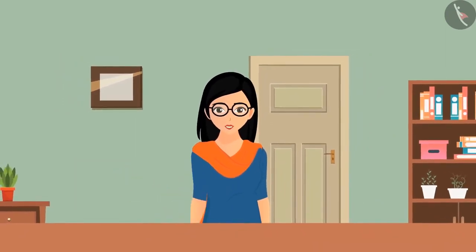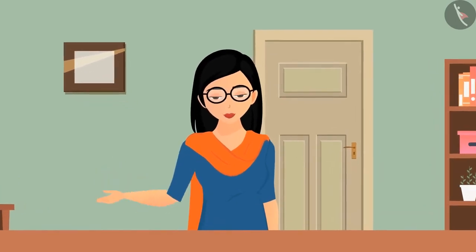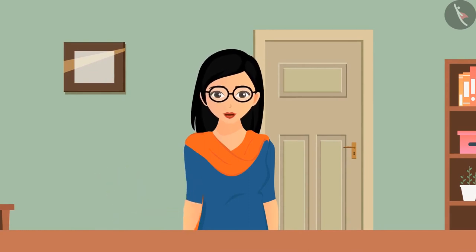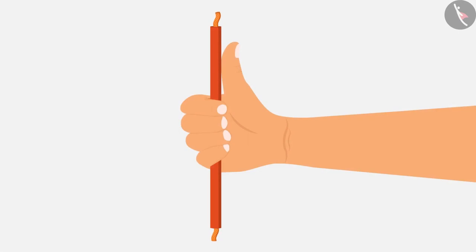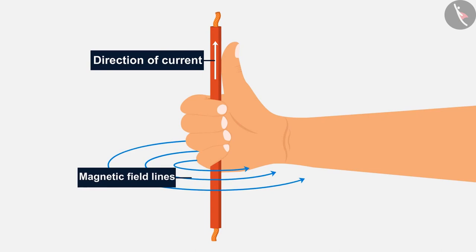Let's make it easier to remember with the right-hand thumb rule. If we need to find the direction of magnetic field lines around a current-carrying conductor, this rule states: imagine you are holding a current-carrying straight conductor in your right hand such that the thumb points in the direction of the current, then your fingers will wrap around the conductor in the direction of the magnetic field lines.